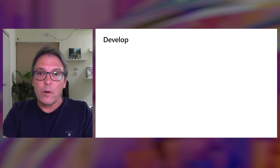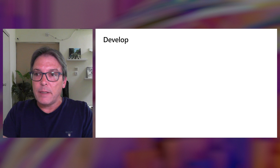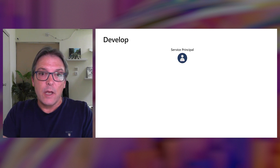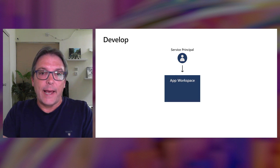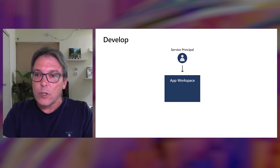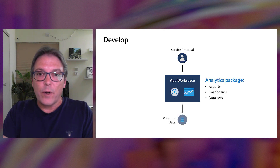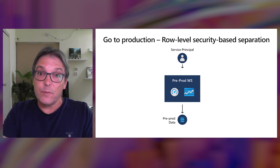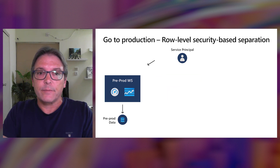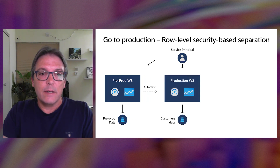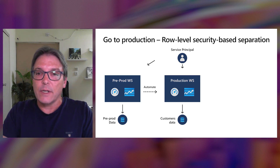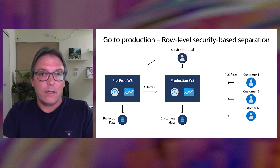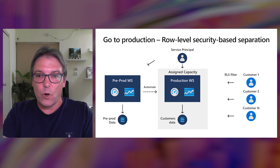In both methods, the app owner needs to create a development environment and perform the following steps. First, create a service principal, then add it as a workspace member to an app workspace that includes the analytics package connected to a pre-prod data source. Going to production differs between the methods. With RLS-based separation, you create a production workspace, publish the pre-prod content into this new workspace, connect the production dataset to the customer's data source, use RLS to separate between customers, and assign the production workspace to a capacity resource.